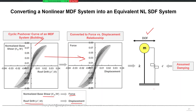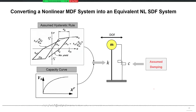This is the same example: you first perform the pushover analysis and get the monotonic pushover curve — that is the backbone curve. Then this curve is joined with some hysteretic rule that describes how loading, unloading stiffness, and reloading should behave. That hysteretic rule is combined with the backbone curve and then given as an input to the equivalent nonlinear single degree of freedom system.